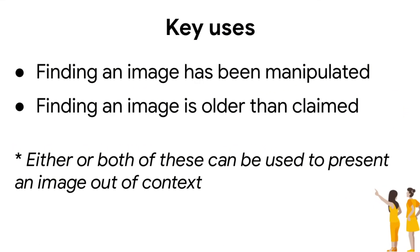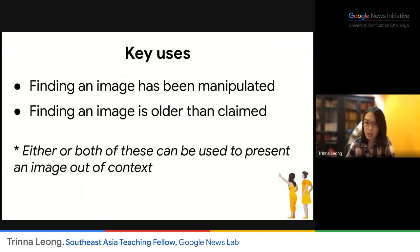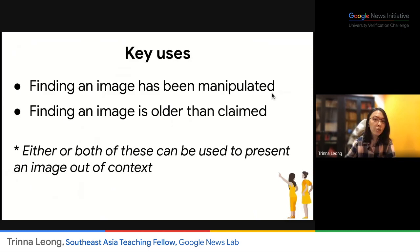The key use for reverse image search is that you can find whether an image has been manipulated or not, or if an image is actually older than it is claimed. Either or both of these cases can be used to present an image that is out of context.